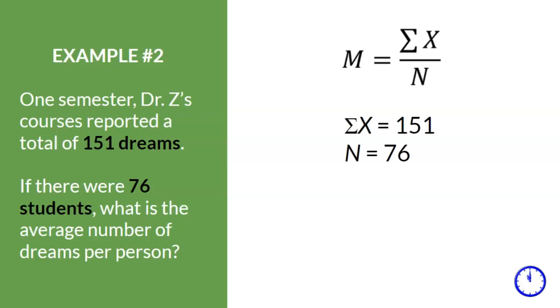Thus, the sum of X equals 151. Since there are 76 students or participants, N equals 76.